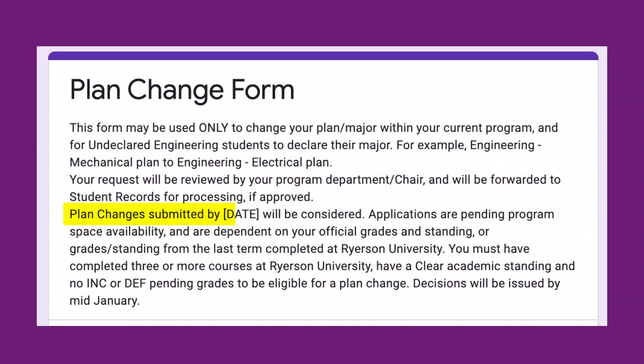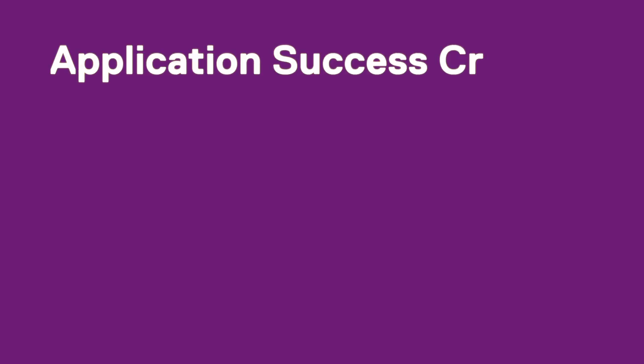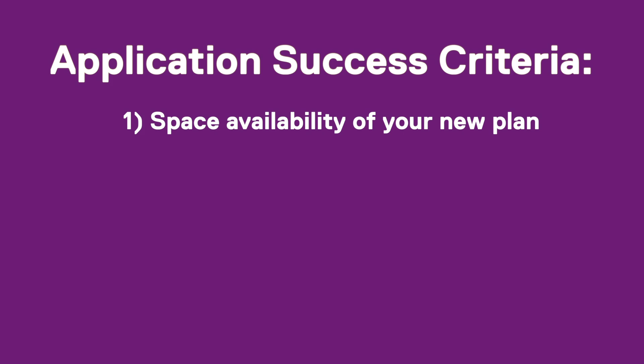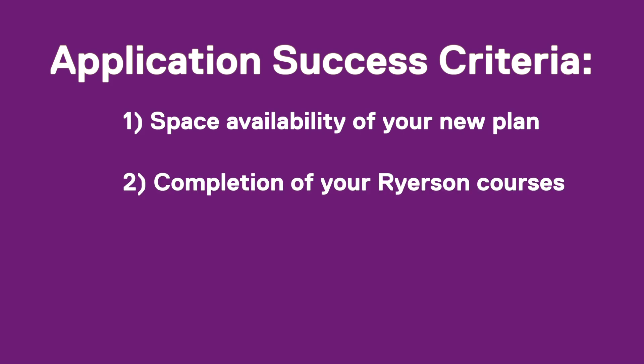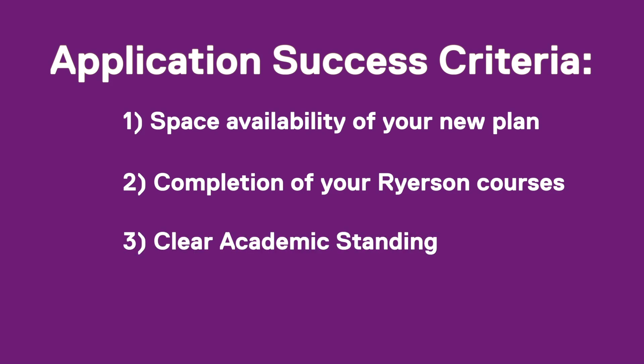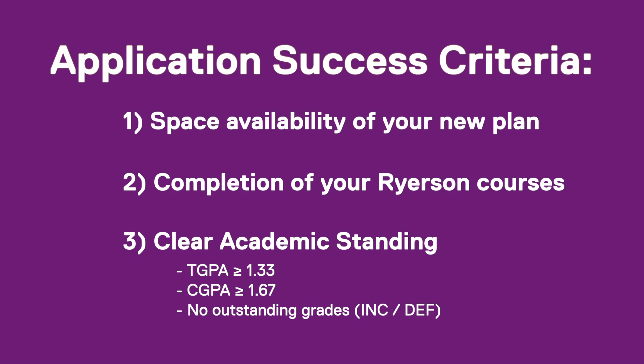The deadline for the plan change form is listed within the instructions of the form. The application success criteria depends on the following: space availability of your new plan, completion of your recent or last term of Ryerson courses, and clear academic standing with a TGPA of 1.33 or higher and a CGPA of 1.67 or higher and no outstanding grades.